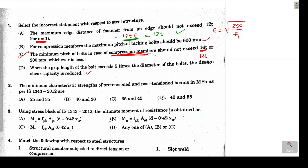The next problem asks for the minimum grades of concrete used for pre-tension and post-tension. The correct answer is option B: for pre-tension the minimum grade is M40, and for post-tension it is M30.